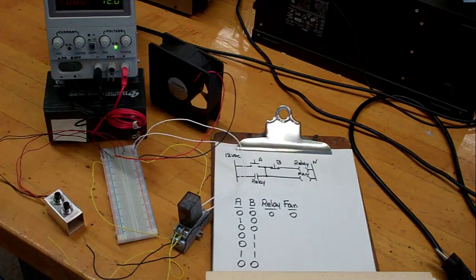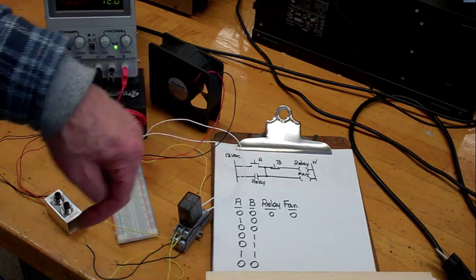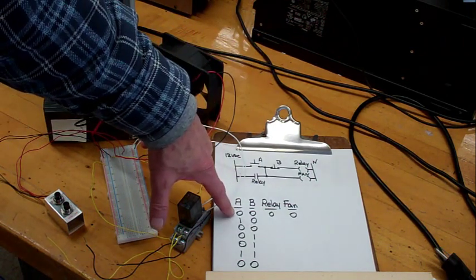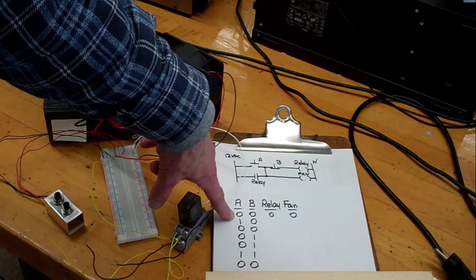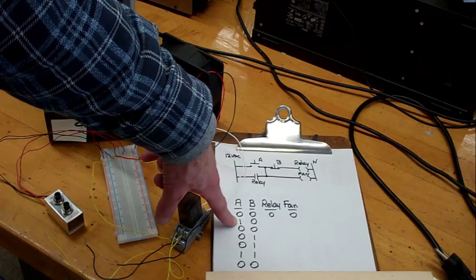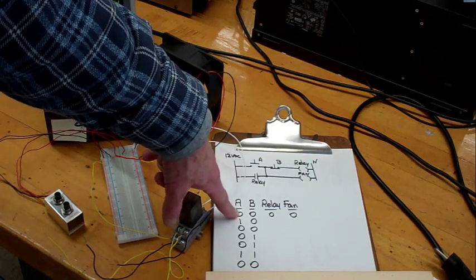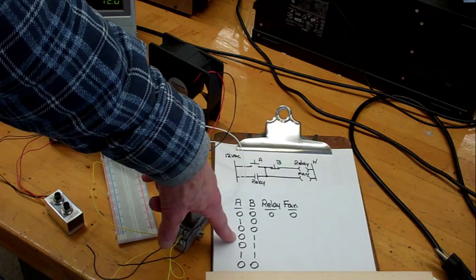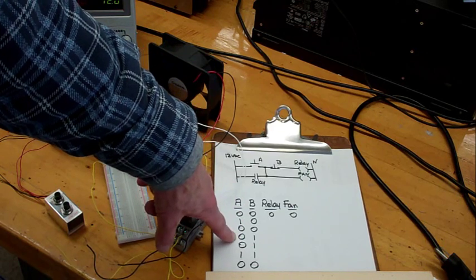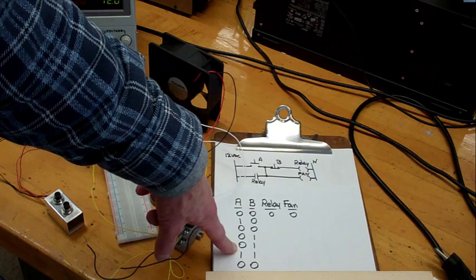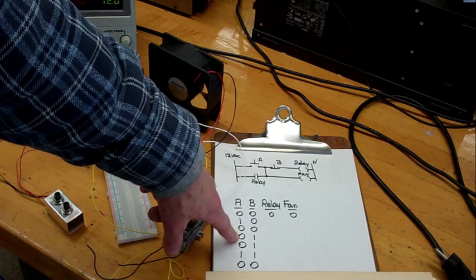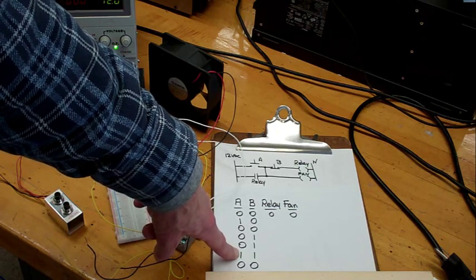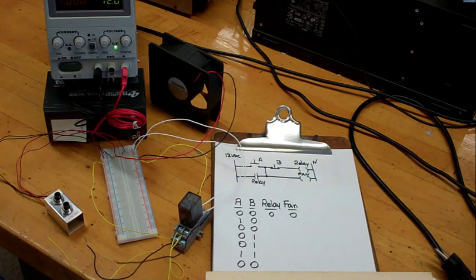This truth table is a little different from the previous truth table. Each row assumes the previous configuration. For example, in row one, neither switches are pressed. In row two, switch A is pressed after being not pressed. In row three, A is not pressed. In row four, B is pressed. In row five, B is pressed again after being pressed. Then in this row, both A and B are pressed. And in the final row, neither are pressed.